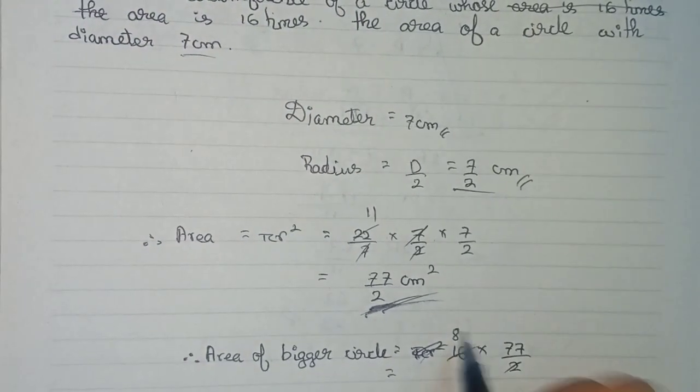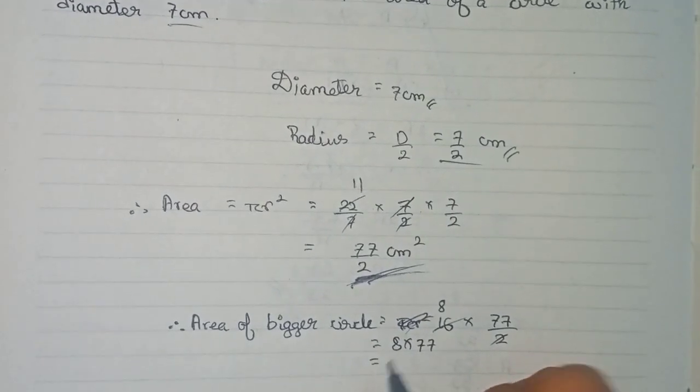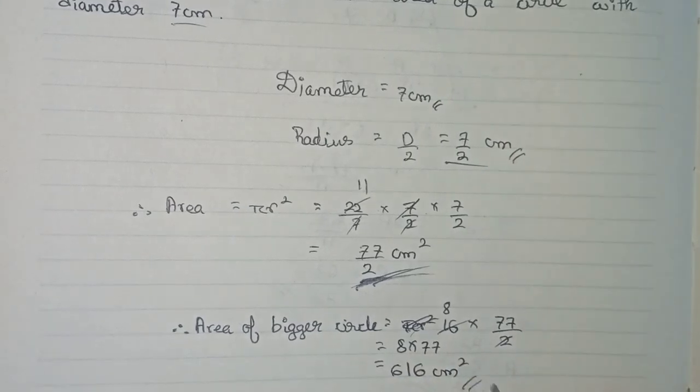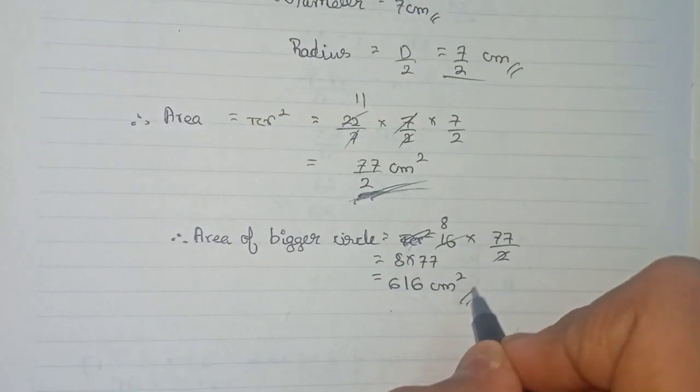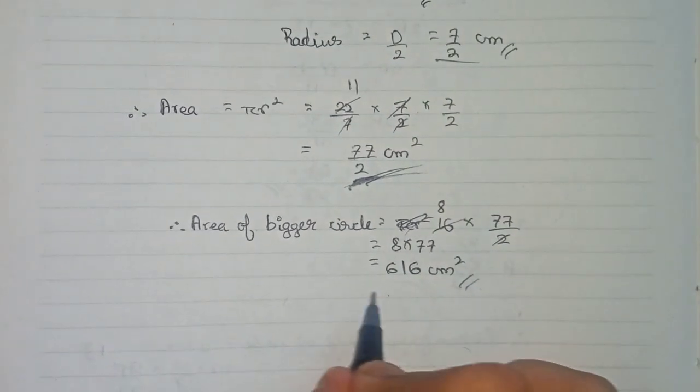So 2 and 8 cut, 8 into 77, so 8 into 77 will be 616 centimeter square. Therefore the area of the bigger circle is 616 centimeter square. Now you can easily find the radius with this information.